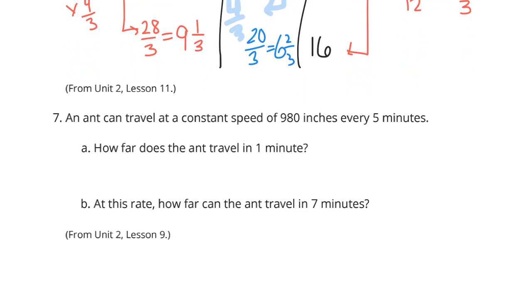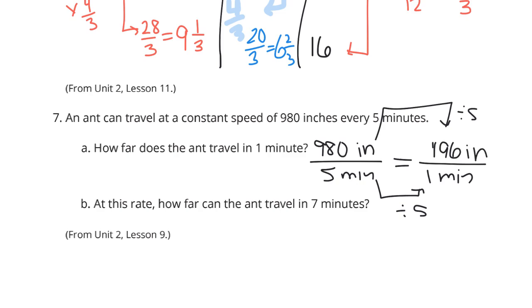An ant can travel at a constant speed of 980 inches every 5 minutes. How far does the ant travel in 1 minute? Well, 980 inches in 5 minutes. Getting that to be 1 minute, we can divide by 5. And so, 980 divided by 5 is 196 inches in that minute.